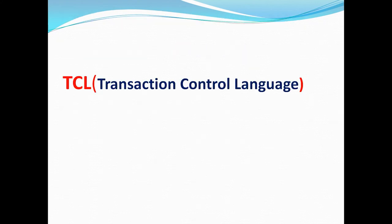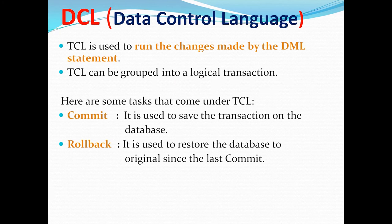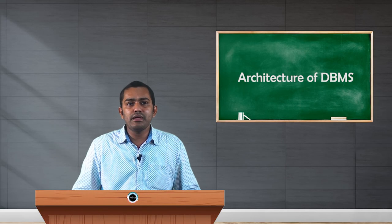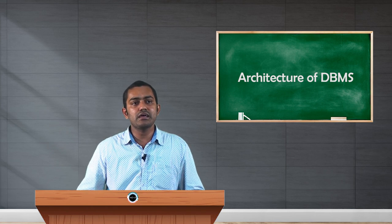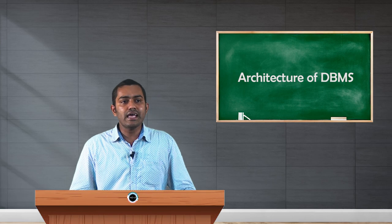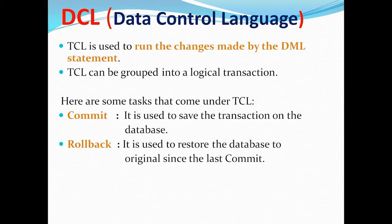The last one is Transaction Control Language (TCL). We can create, manipulate, and control a database. After that, if we want to permanently save changes — to make all changes made during a transaction permanent — we use TCL. TCL has two commands: COMMIT and ROLLBACK. With COMMIT, we can make permanent changes to a database. ROLLBACK is used to restore the database, similar to the undo option, undoing operations performed in a transaction.